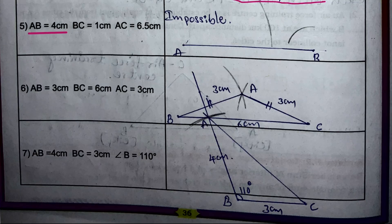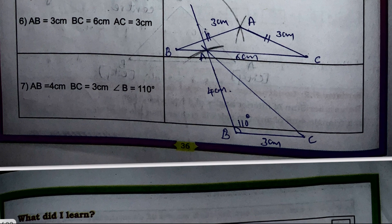Fifth example: AB = 4 cm, BC = 1 cm, AC = 6.5 cm. It is not possible to construct this triangle because the arcs do not meet at any point. Sixth example: AB = 3 cm, BC = 6 cm, AC = 3 cm. Using those measurements and instruments, we can construct the triangle neatly.